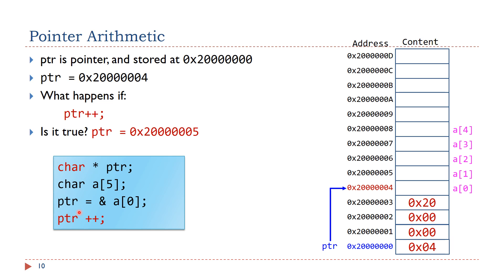Suppose ptr points to an array of characters. Each character takes one byte in memory. The pointer ptr points to the beginning of the array — in other words, ptr points to a[0]. If we run ptr++, the pointer points to the next element in the array. The content of ptr is incremented by the size of a character. Because each character takes one byte, the value of ptr is incremented by one. Therefore in this case, the value of ptr is 0x2000005 in hex.